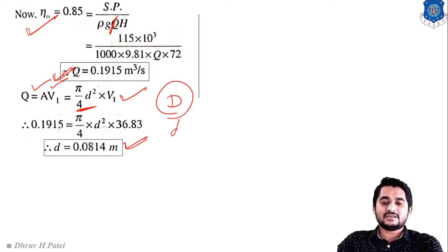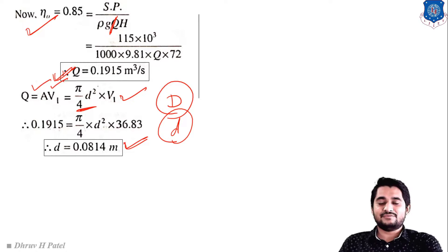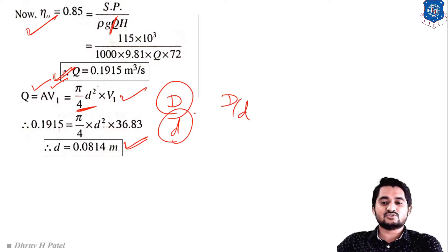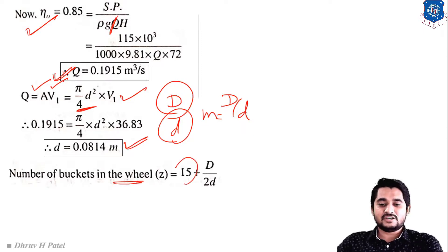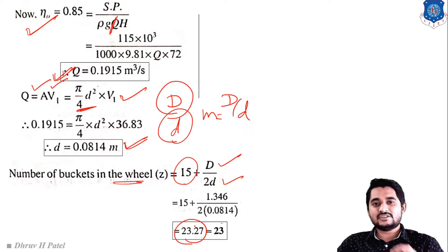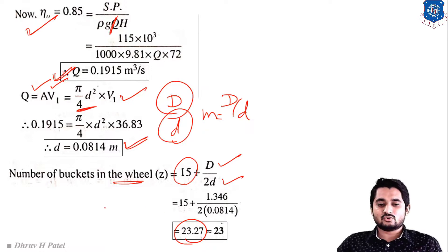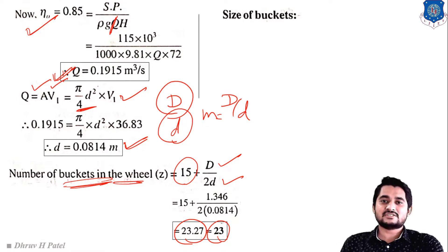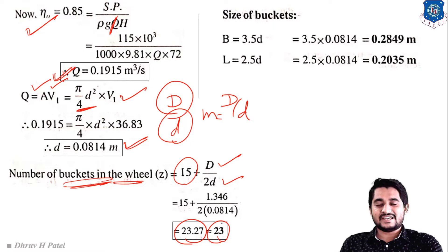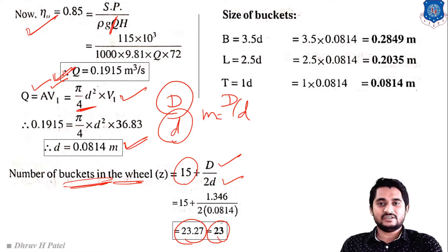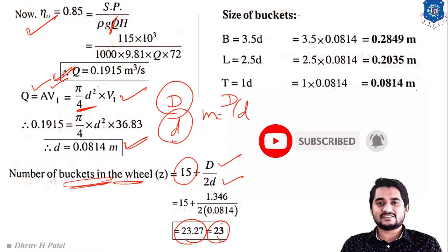Once capital D and small d are found, all design values can be calculated. The jet ratio is D/d. The number of buckets is 15 plus D/(2d) equals 23.27, rounded to 23. Bucket dimensions: width equals 3.5d, length equals 2.5d, depth equals 1.0d. That is it for today's lecture. Thank you for watching and keep revising fluid mechanics.